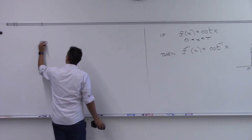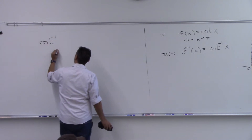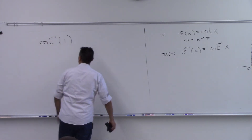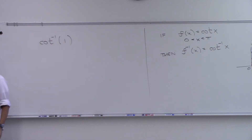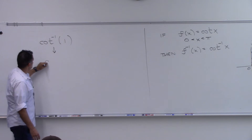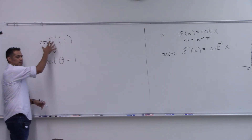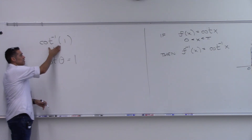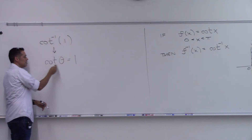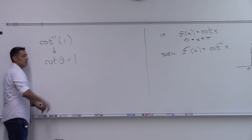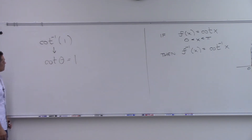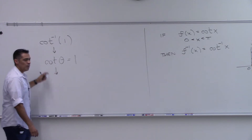What would cotangent inverse of 1 be? What is that really saying? This is saying: where is cotangent of some angle equal to 1? That's the key thing to understand from this notation — find the angle that when you take cotangent of it, you get that answer.